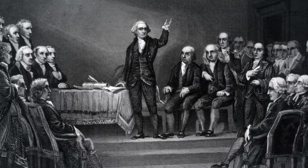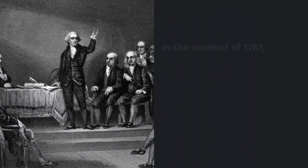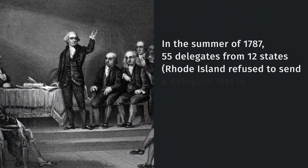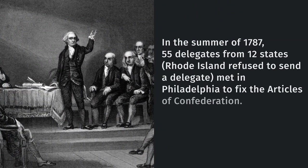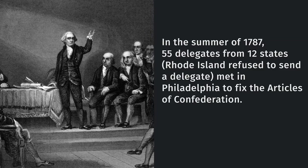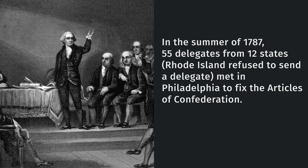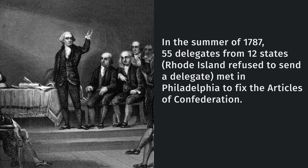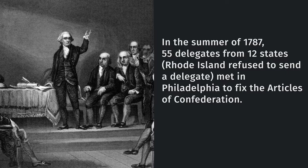Other states began to see what was going on in Massachusetts and realized that the government needed to change. They didn't want a rebellion like that in their state. So in the summer of 1787, 55 delegates from 12 states — Rhode Island refused to send anyone — met in Philadelphia to fix the Articles of Confederation.